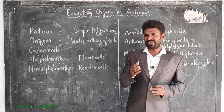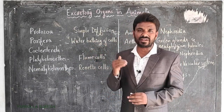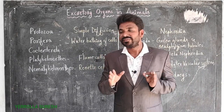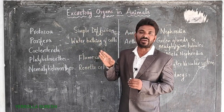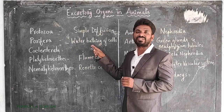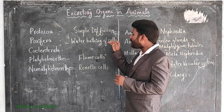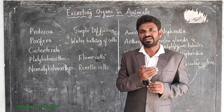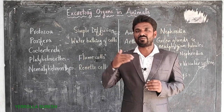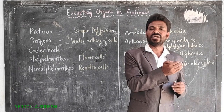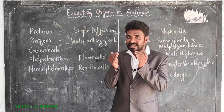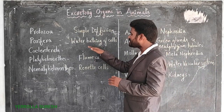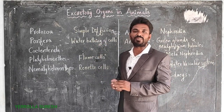Next is Porifera, the group in which sponges belong. These organisms are fixed and cannot move at all. So how do they excrete? Organisms of the Porifera group excrete waste material simply by water bathing of all cells. Water flows throughout all the cells, and the waste materials present in the cells are carried away by the water. This water bathing of cells is the excretion method in Porifera.